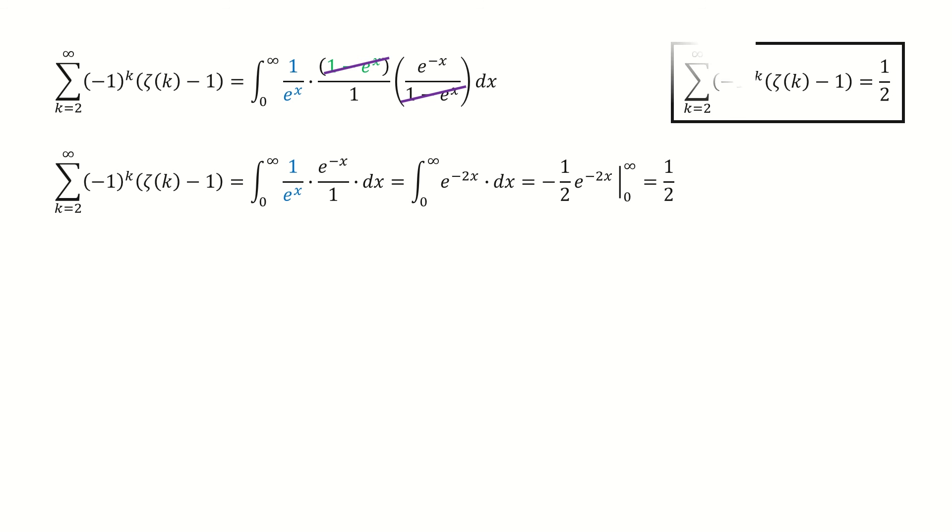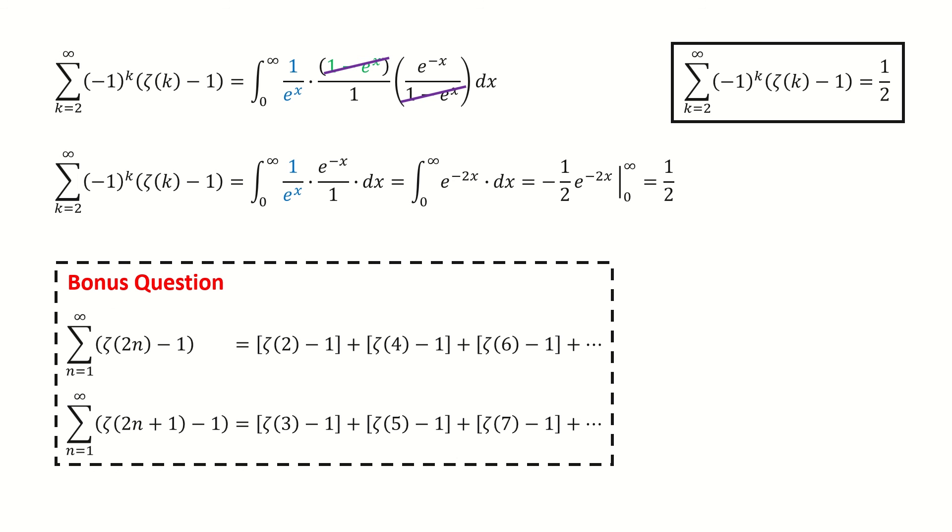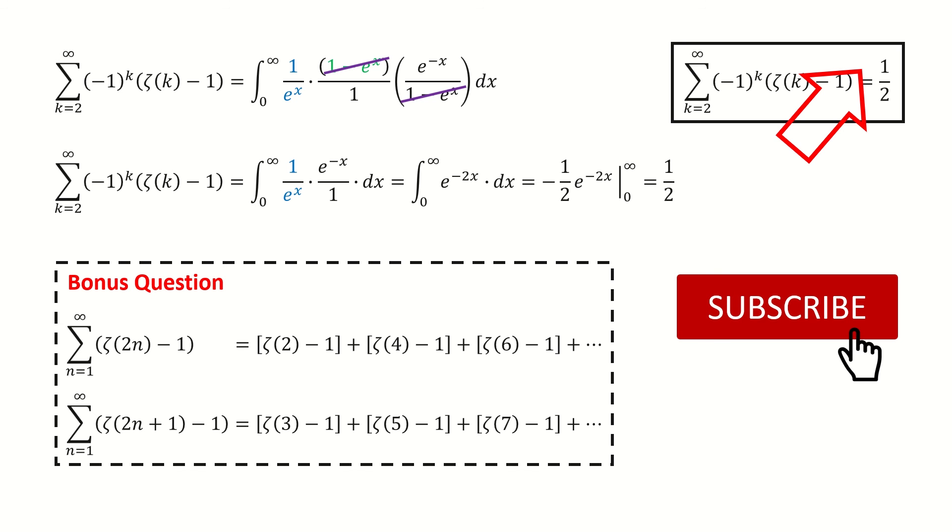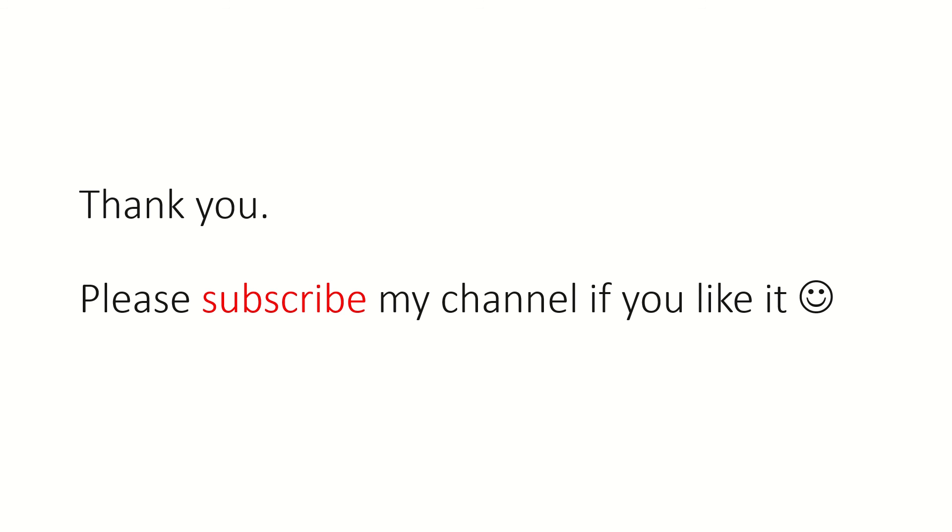We have calculated this alternating series, which is equal to one half. Here is a bonus question. What about the series for all even terms? And what about the series for all odd terms? You can click here to see the answer in that video. I also put the link in the description box. Don't forget to subscribe to my channel and give a like. That's all for today. Thank you for watching.